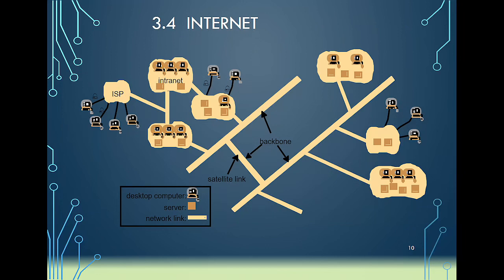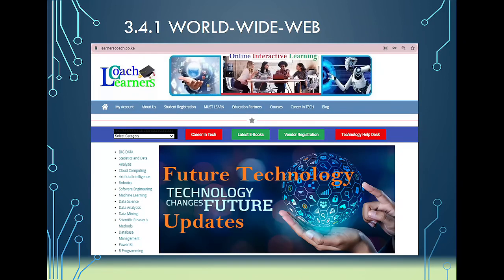The internet is the biggest distributed system we have, connecting different sets of systems including the Internet of Things and artificial intelligence infrastructure. To access the internet you need software such as web browsers and network operating systems. Communication links like satellite networks and fiber optic connections ensure we always have a well-implemented distributed system.